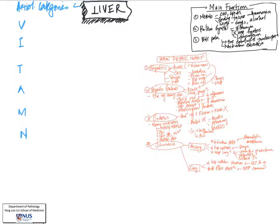Having looked at the main liver functions as well as some of the main clinical disease manifestations, we're going to now focus on some of the conditions that affect the liver. We're going to organize this by etiological categories using the mnemonic VITAMIN.